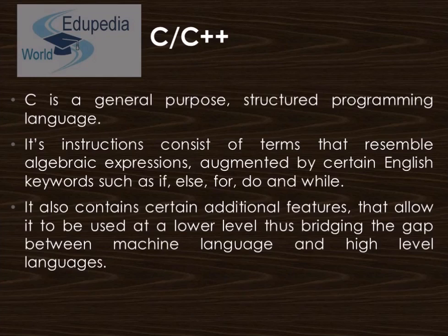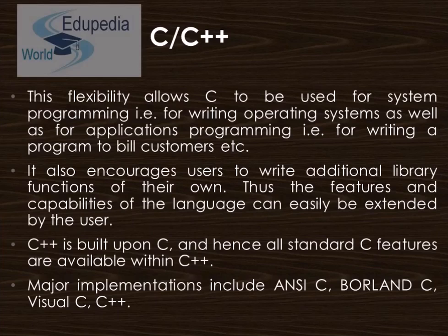C is a language which bridges the gap between machine language and other high-level programming languages. This flexibility allows C to be used for system programming — that is, for writing operating systems — as well as for application programming, such as writing a program to bill customers. It also encourages users to write additional library functions of their own, so the features and capabilities of the language can easily be extended by the user.